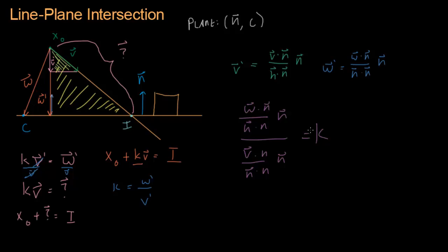And look at that. A bunch of this stuff cancels out. These two n's are in the numerator and the denominator, so they're going to cancel out. And then these n·n down here is going to cancel out. And so I can simplify that by just writing w·n over v·n.